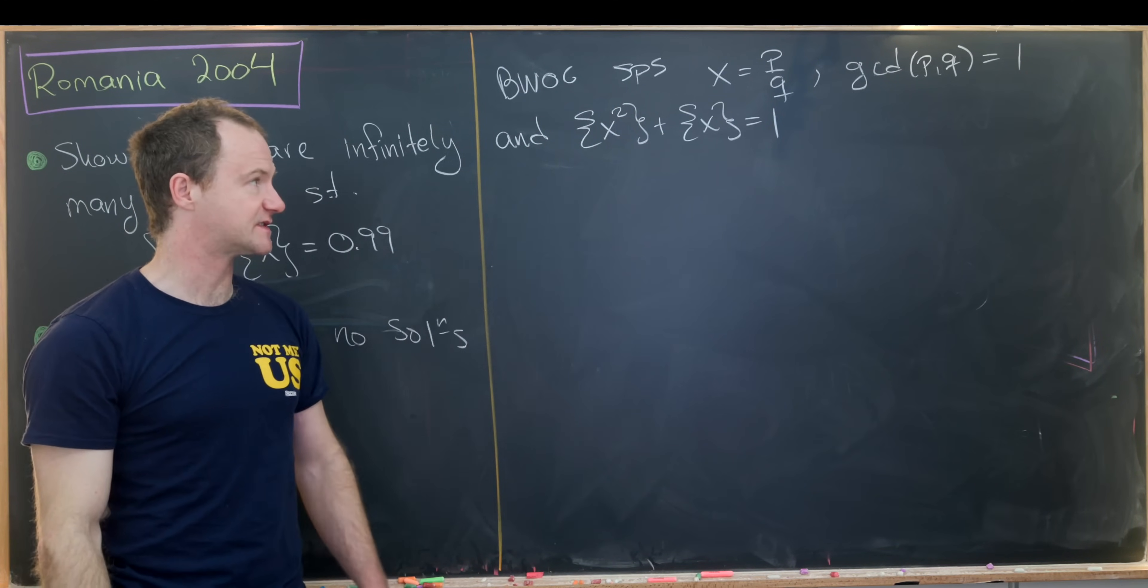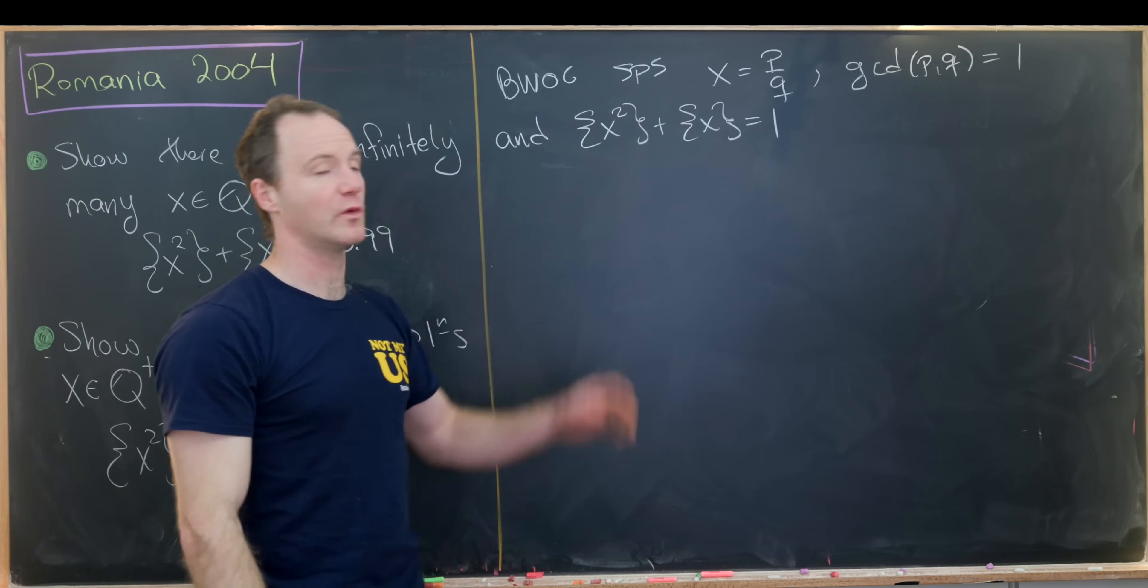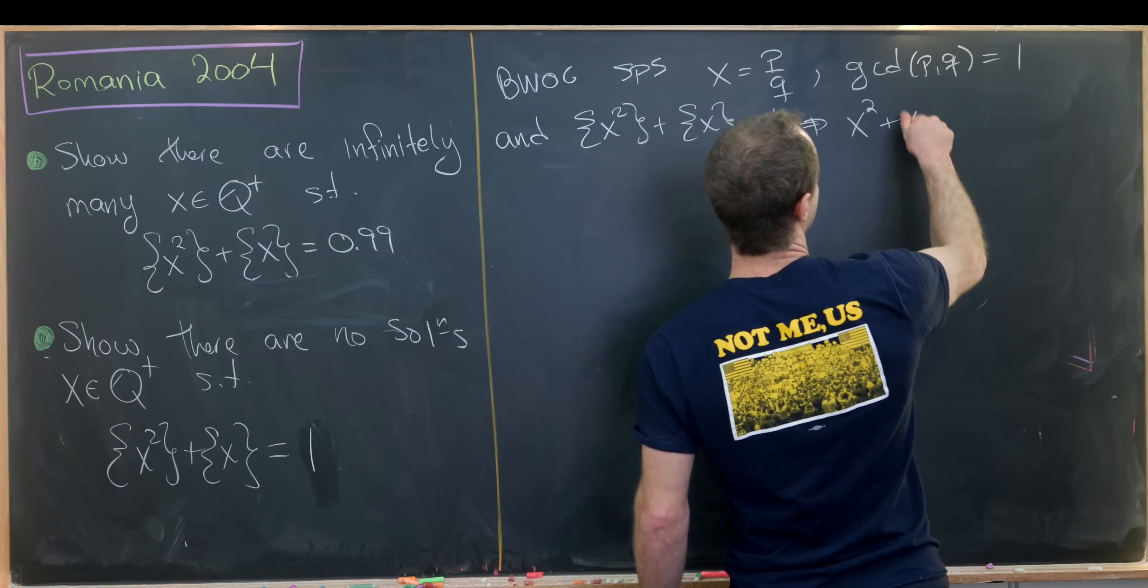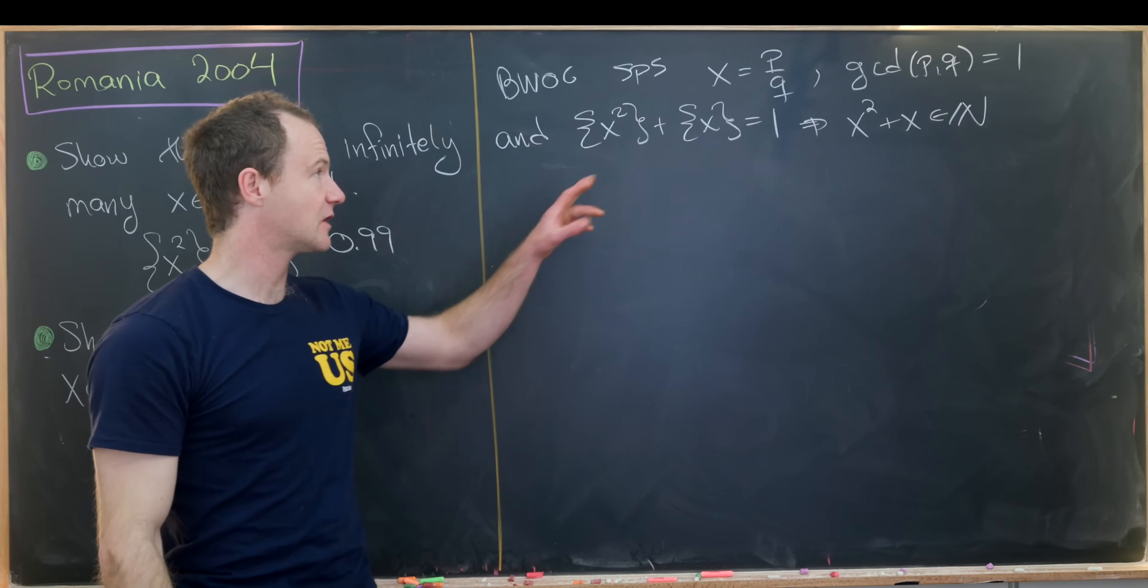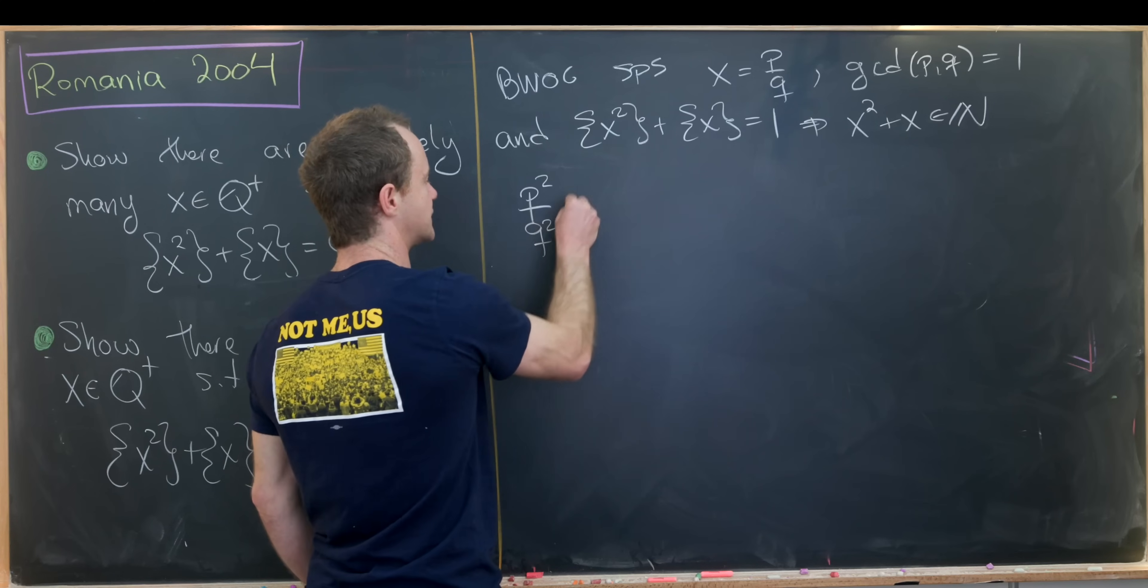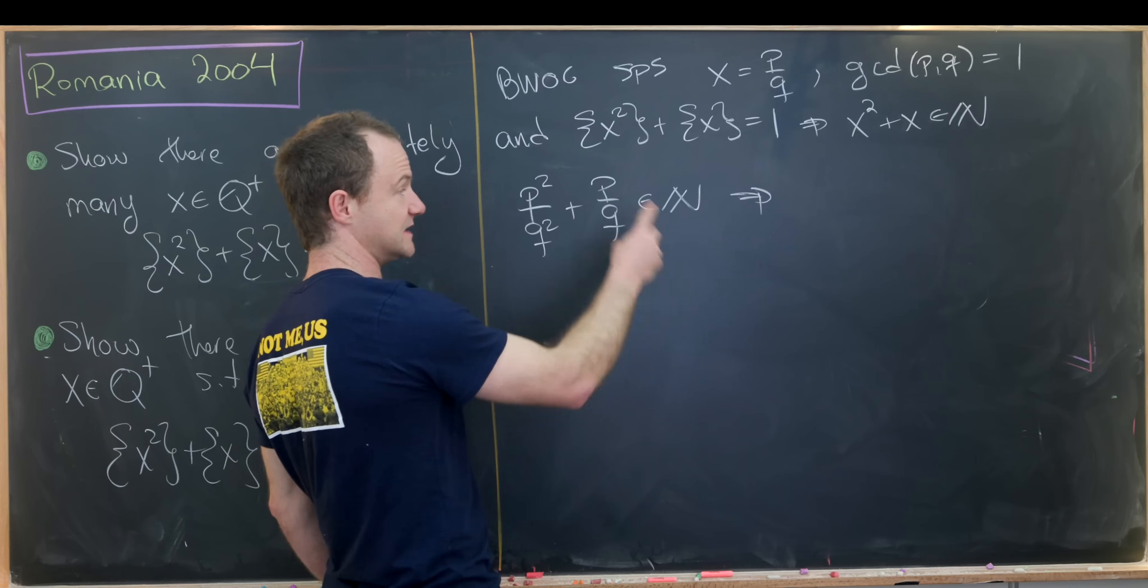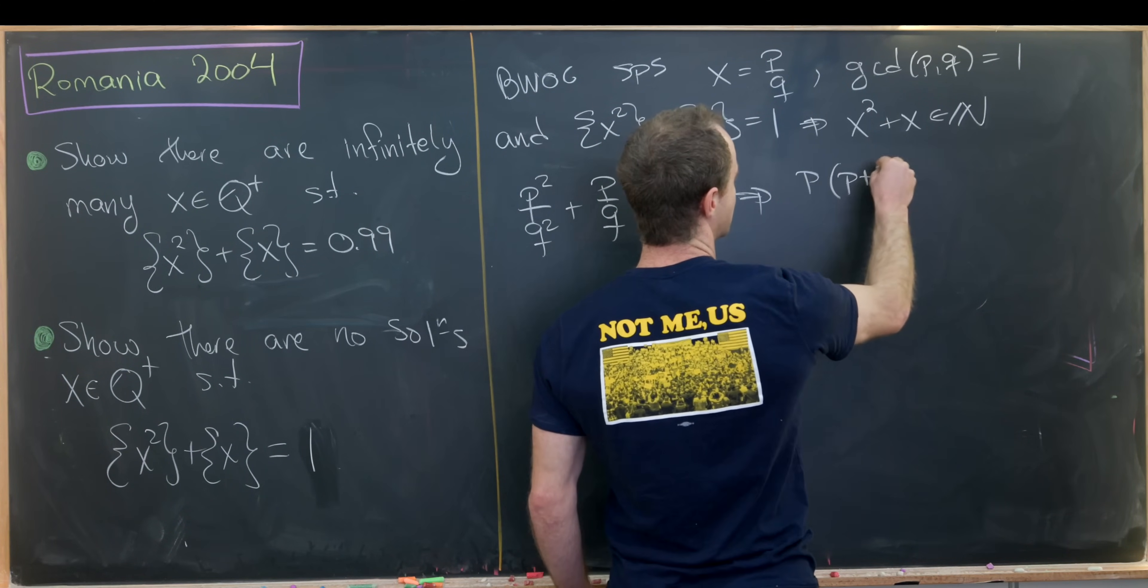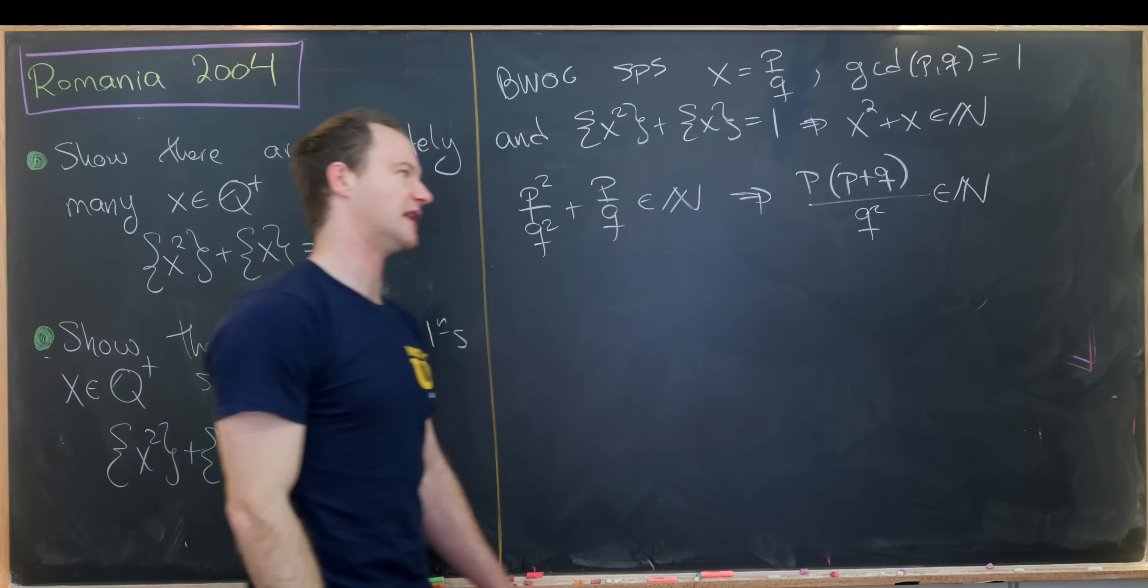But the only way for the sum of these two things to be 1 is if the sum without the fractional part is a natural number. So from this we get that x squared plus x is a natural number. But now from here we can put in our version of x. That gives us p squared over q squared plus p over q must be a natural number. We can combine these terms by finding a common denominator. That gives us p times p plus q over q squared must be a natural number, where I factor that numerator.